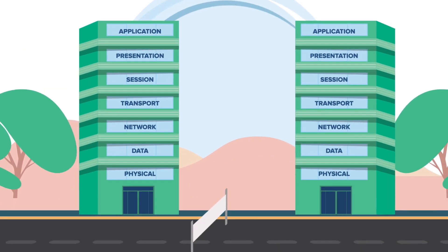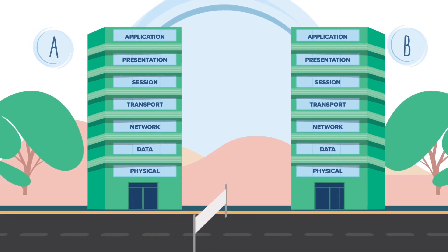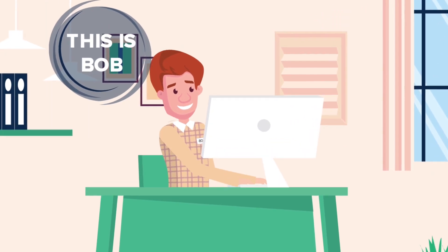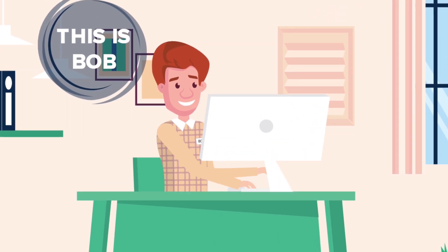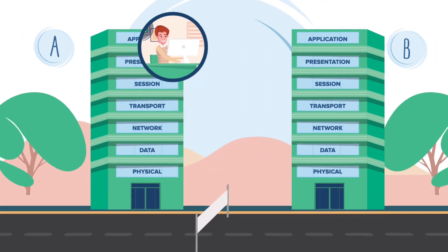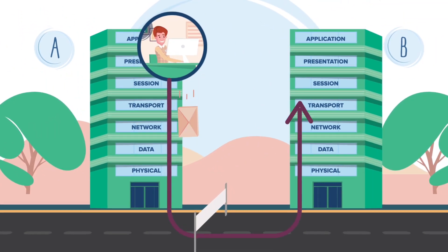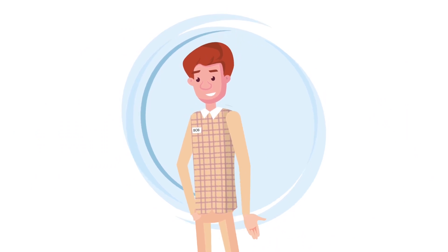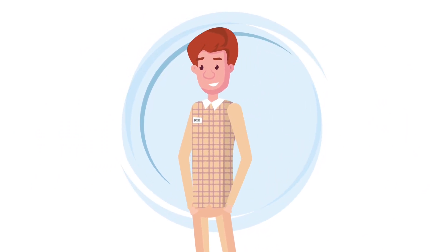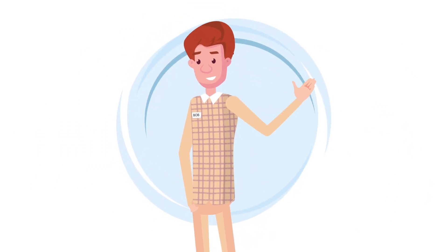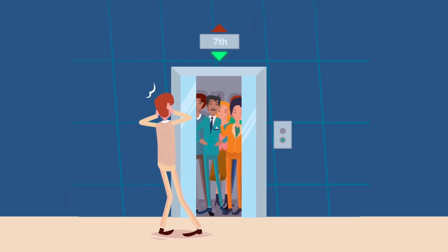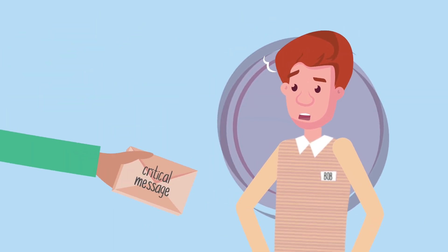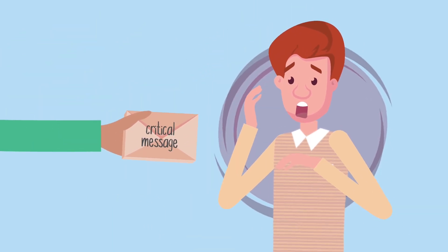Here's an example. Two seven-story buildings and a highway is the transport medium. This is Bob. He works on the top floor of Building A, and his job is to deliver messages from his office to the top floor of Building B. Sometimes Bob delivers messages in a similar way to how TCP/IP works. During the delivery, he faces a crowded elevator and sometimes traffic on the highway. The delays along the way make his job slow and imprecise.